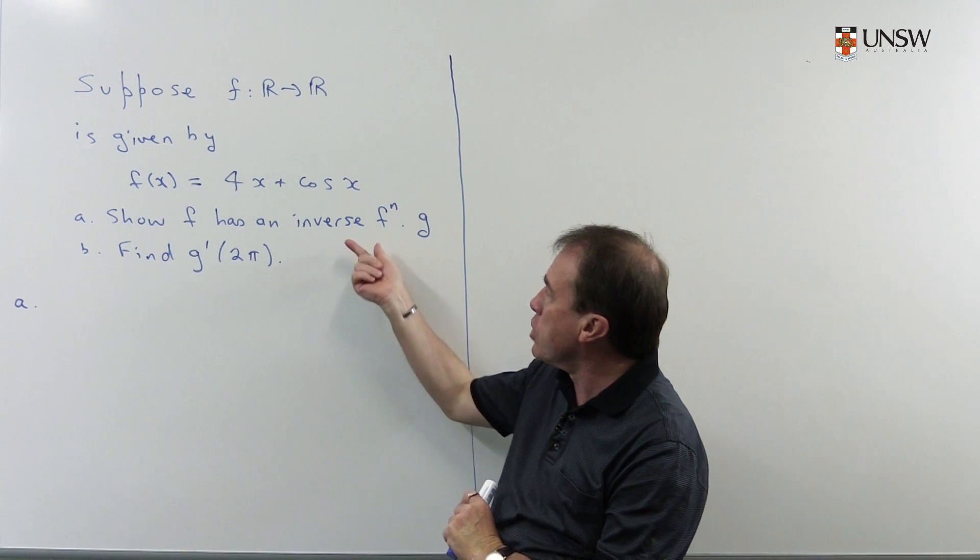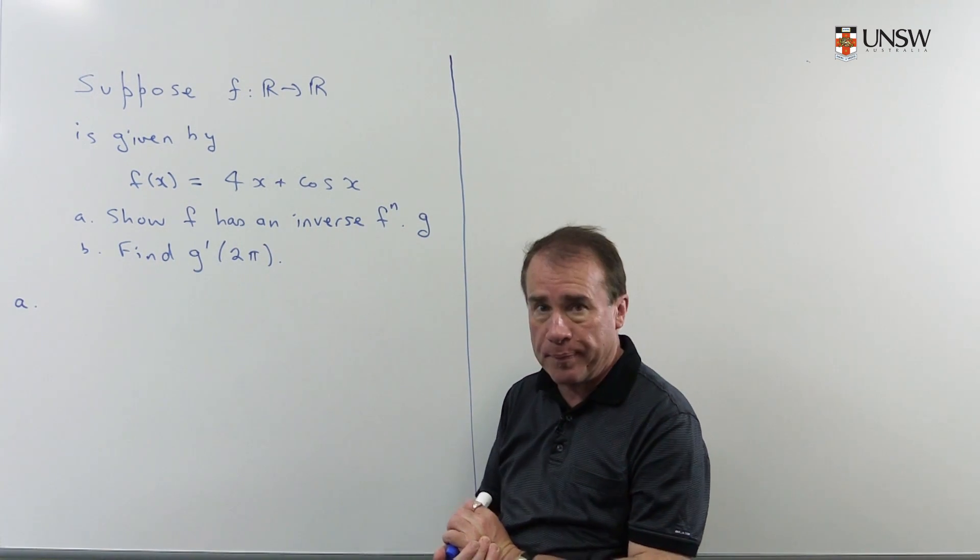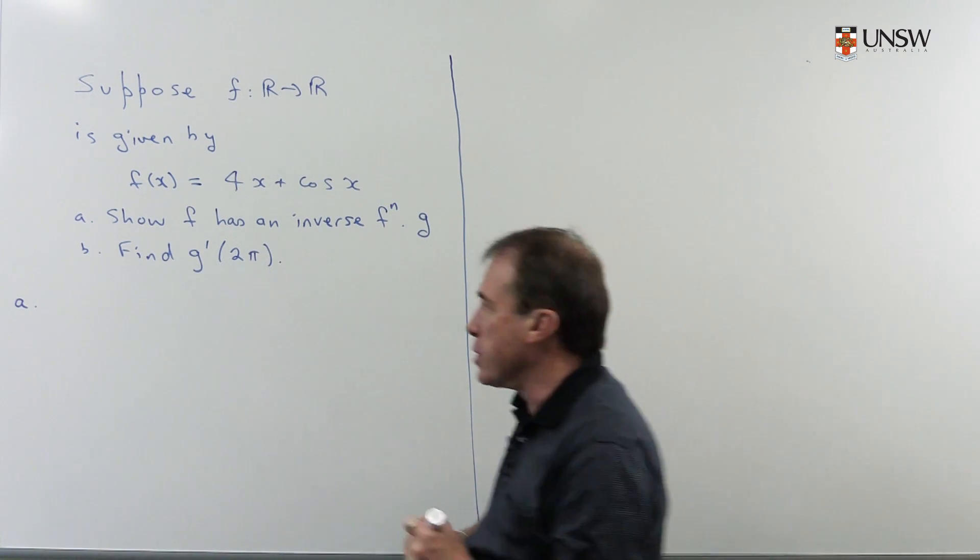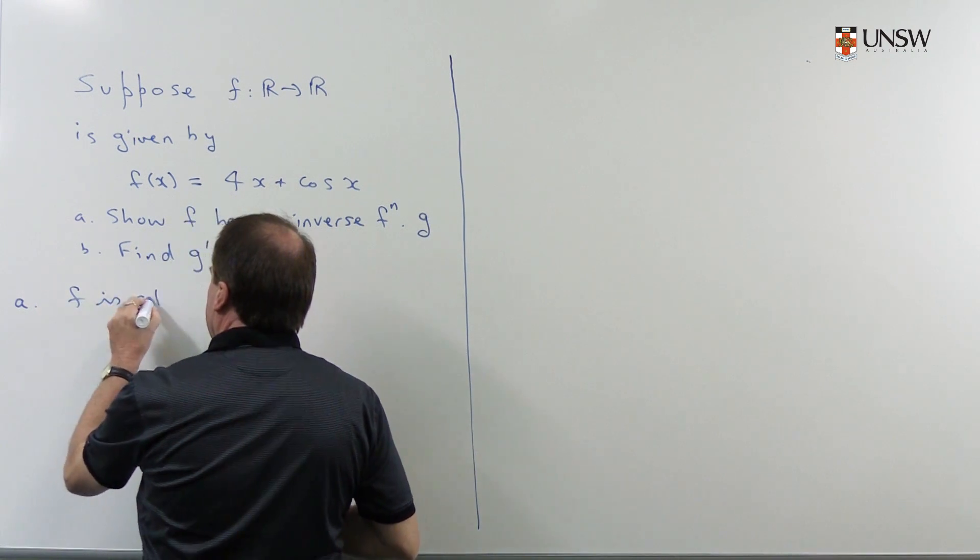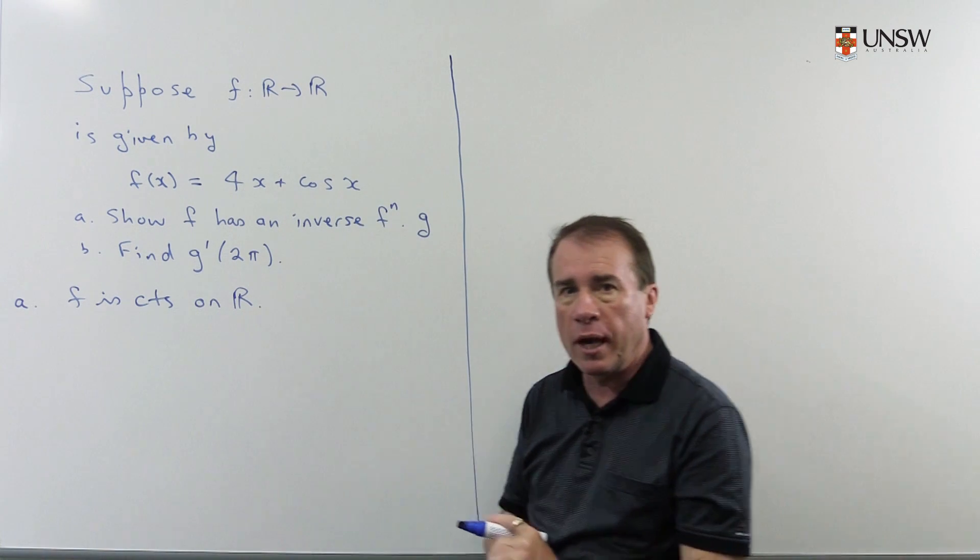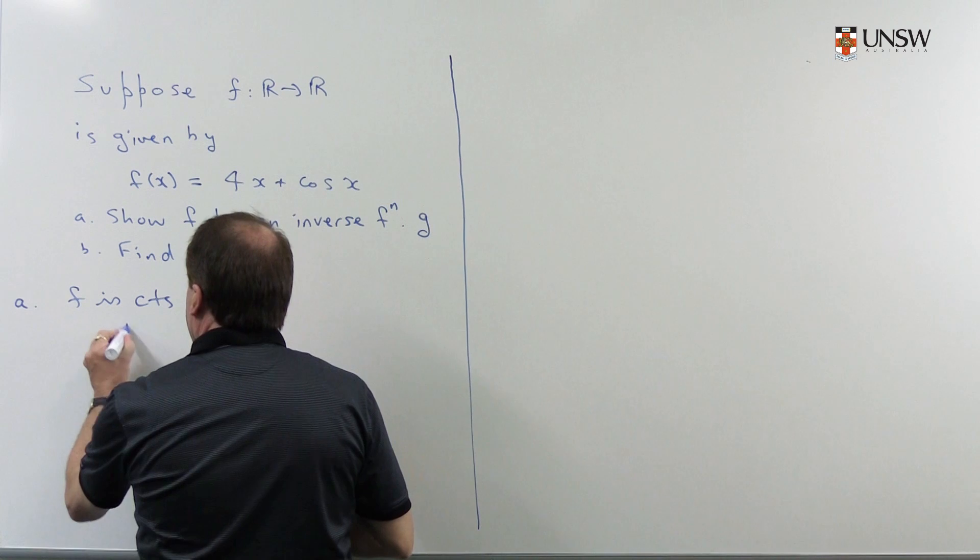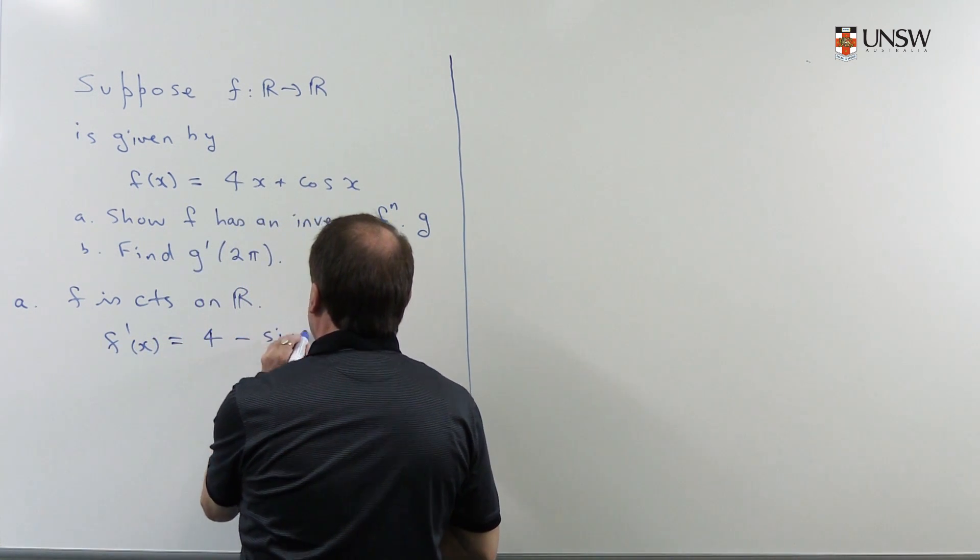The first part of the problem is we want to show that in fact this function does have an inverse function g. And the way we're going to do that is, firstly, just to note that f is continuous. That's the important idea: f is continuous on R. And we're going to calculate the derivative of f, so f'(x) is going to be 4 minus sin(x).